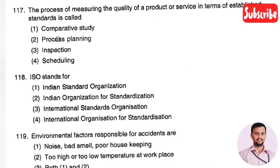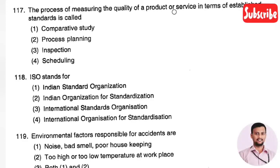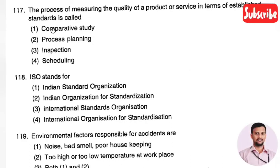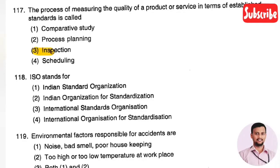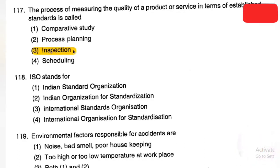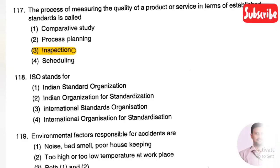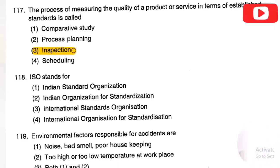The next question: the process of measuring the quality of a product or service in terms of established standards is called — Option 1: comparative study, Option 2: process planning, Option 3: inspection, Option 4: scheduling. The right answer is Option 3, inspection. In inspection, we establish quality standards and measure processes based on them.